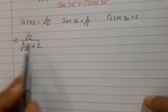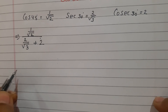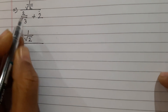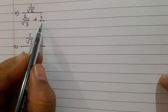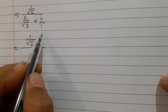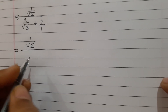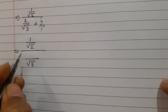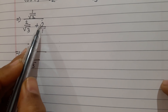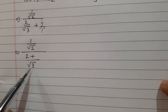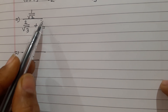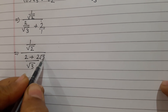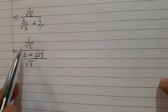In the numerator there is only a single term. In the denominator there are two terms, so first we will solve the denominator. We will take LCM in the denominator. We will write 2 by root 3 as it is, and for the second term we multiply by root 3, making the denominator root 3. So the combined denominator gives us 2 plus root 3 over root 3, which becomes 2 root 3 in total.